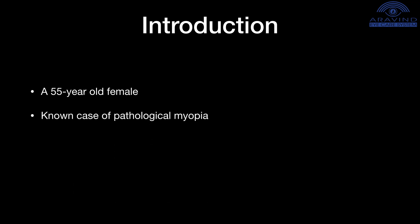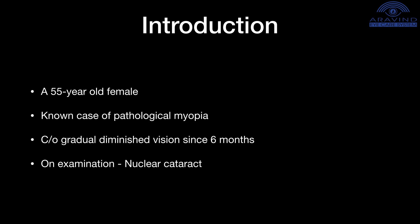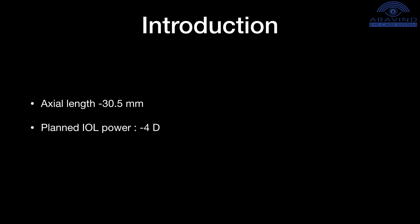Phacoemulsification in high myopia. This is a case of a 55-year-old female patient who is a known case of pathological myopia. She came with complaints of gradual diminution of vision in her left eye since the last six months. On examination, she had developed nuclear cataract. After thorough examination, she was planned to undergo phacoemulsification and IOL implantation in the same eye. Her axial length was 30.5 mm. Planned IOL power was minus 4 diopters.